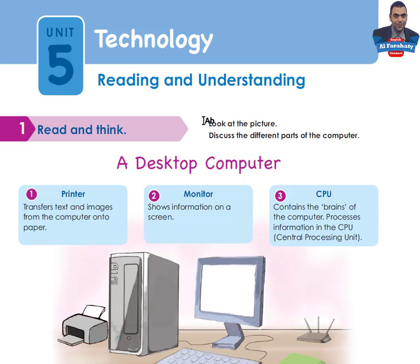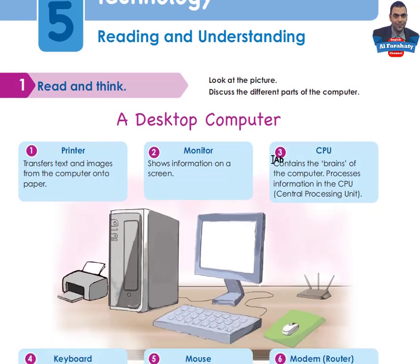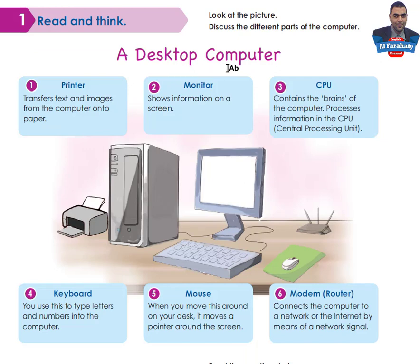Let's look at Activity 1: Read and Think. Look at the picture and discuss the different parts of the computer. You have here a desktop computer and these are the different parts. One: Printer — a printer transfers text and images from the computer onto paper. Two: Monitor — the monitor shows information on a screen.